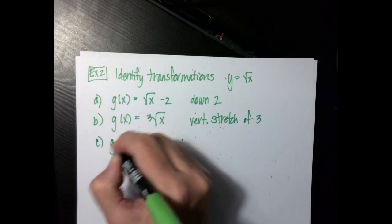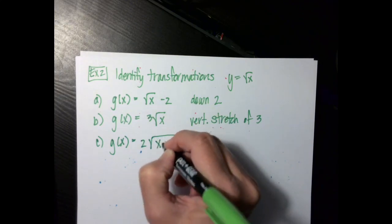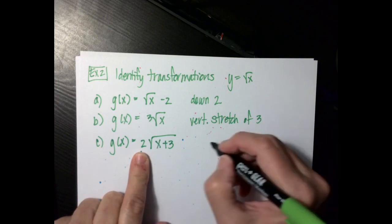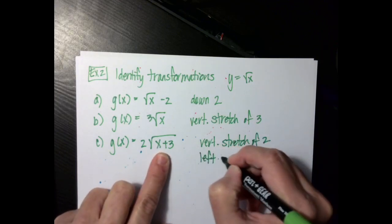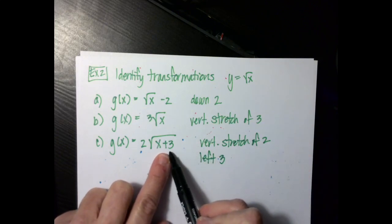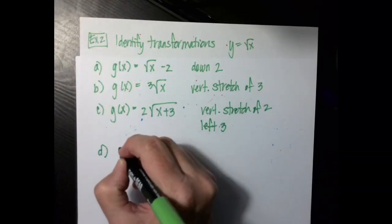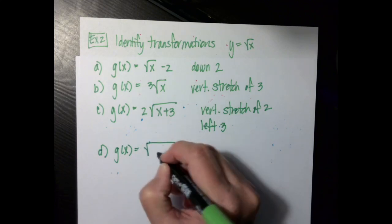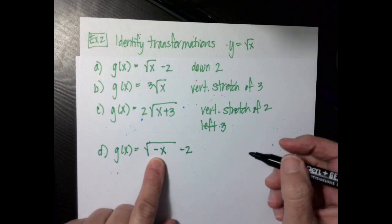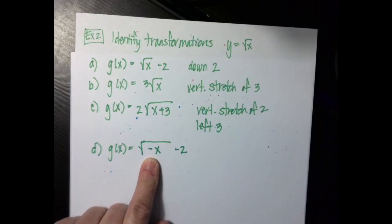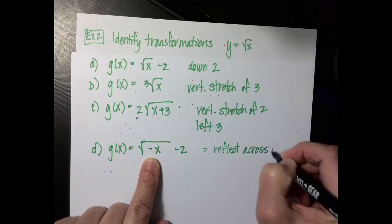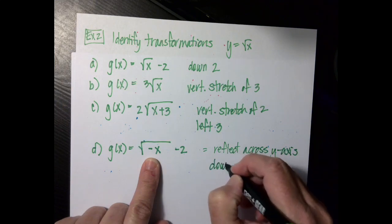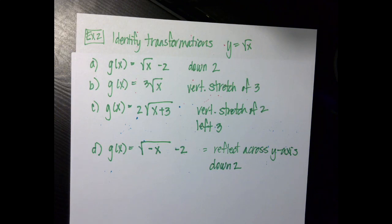For part c, g of x equal to 2 times the square root of x plus 3: we report transformations left to right, so it is a vertical stretch of 2, and then it goes left 3 — because inside the function means the opposite sign. For part d, g of x equal to the square root of negative x minus 2: the negative is inside the function, so it is a reflection across the y-axis, and then it goes down 2. Regardless of the function type, the process is exactly the same.